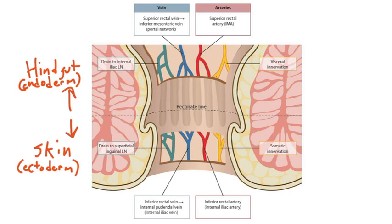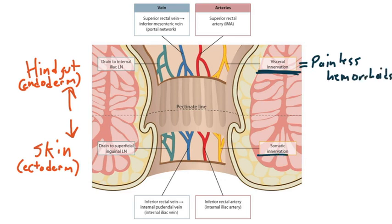Let's first focus on the nerves. Above the line receives visceral innervation. This means that hemorrhoids or other lesions above the line are painless. The area below the line receives somatic innervation, which means that hemorrhoids or other lesions here would be painful, because somatic nerves transmit pain.